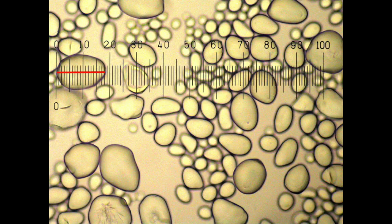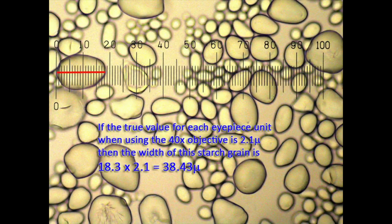If you apply the value we derived previously of 2.1 microns per IP unit for this objective, then this starch grain actually measures 38.43 microns in width. And that's all there is to it.